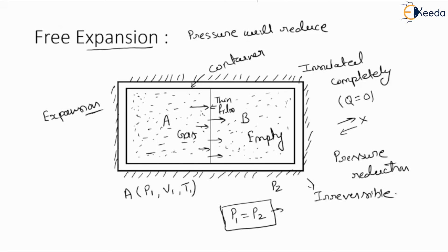So this process — the expansion of gas from A to B because of the thin film breakage — is called free expansion. When the pressures in A and B become equivalent, the process becomes irreversible. The gas will not be able to return to its initial condition when p1 and p2 become equal. This is the process of free expansion, and this free expansion process is always an irreversible process.